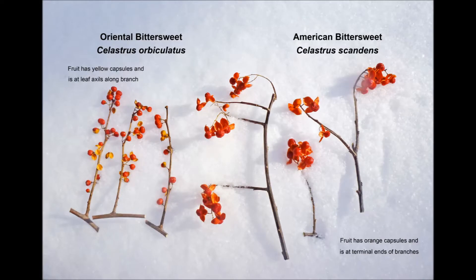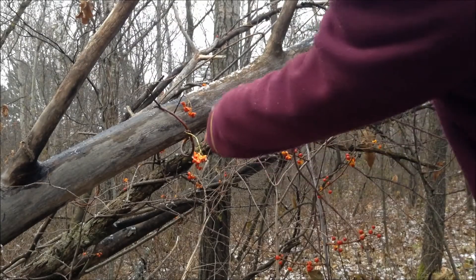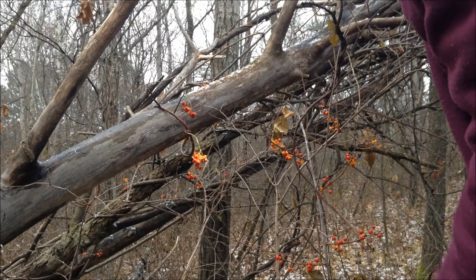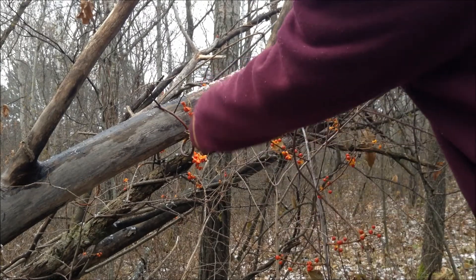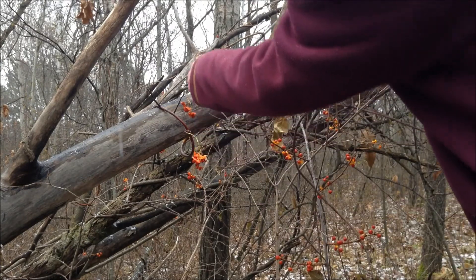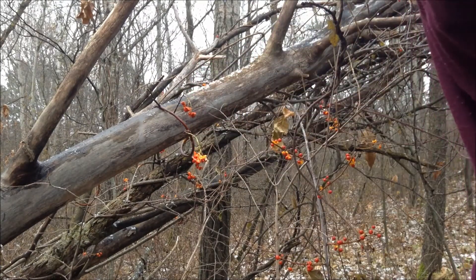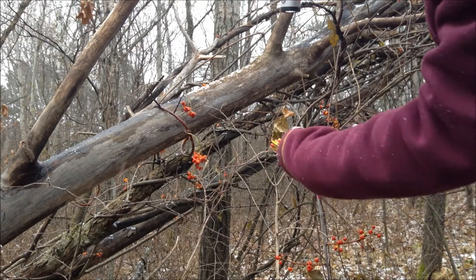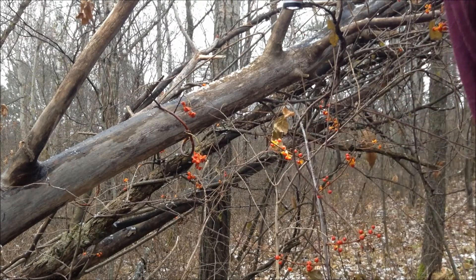A link to the oriental and American bittersweet ID sheet will be on the last slide. American bittersweet has orange seed capsules — you can remember that orange is okay — and the berries are all at the end of the branches. Right next to it is oriental bittersweet. Oriental has yellow seed capsules.